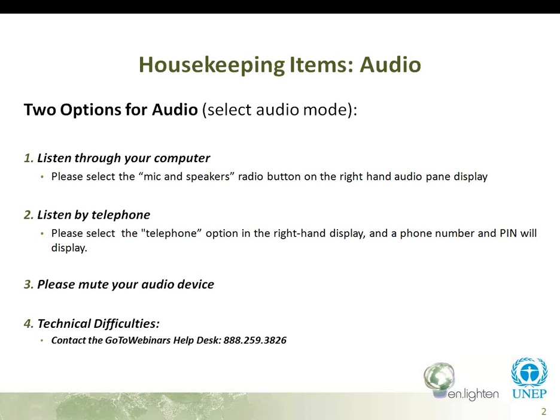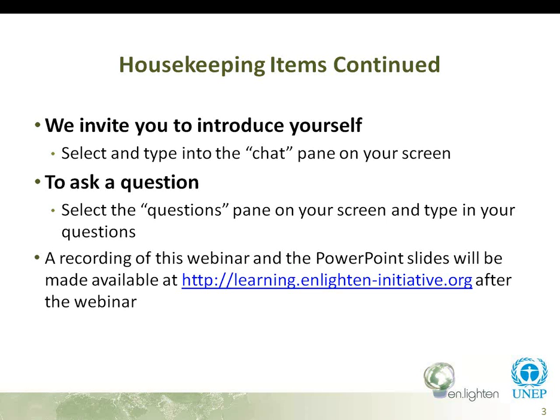Before we begin, I'd like to quickly go over some webinar features. For audio, you have two options: listen through your computer or over your telephone. If you choose your computer, please select the microphone and speakers option in the audio pane on the right-hand side of your screen — this will eliminate the possibility of feedback and echo. If you select the telephone option, a box will display the telephone number and audio PIN. Please mute your audio device before the presentations begin. If you have technical difficulties, contact the GoToWebinars Help Desk at 888-259-3826.